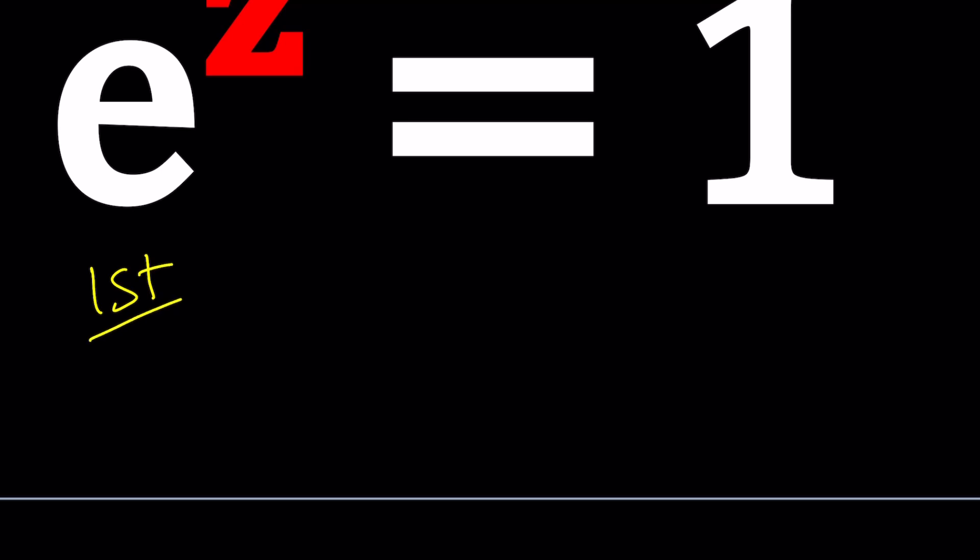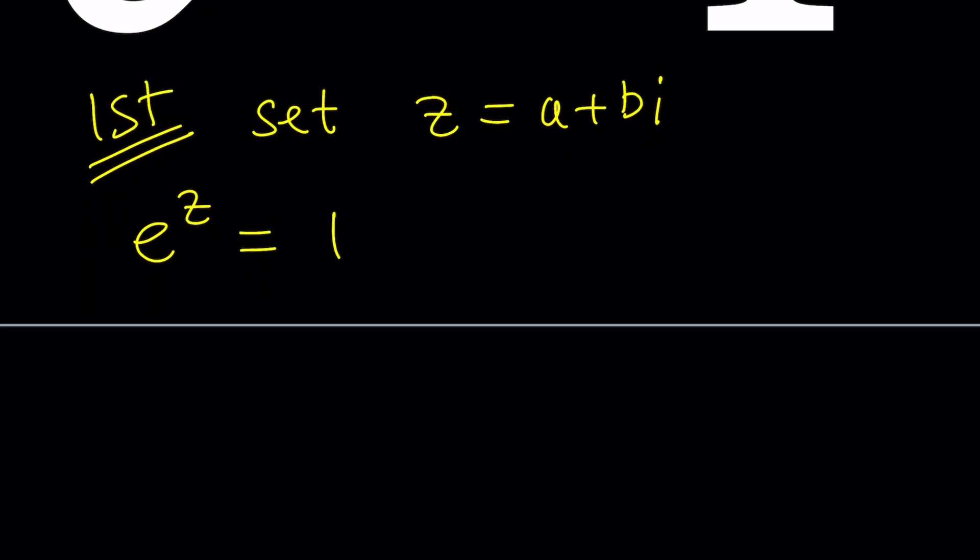So for my first method I'm going to set z equal to A plus B I. And why not? That's the name of this channel and it's actually almost all the time helpful. So now let's replace z in our equation which is e to the z equals one with A plus B I. So we get e to the power A plus B I equals one. And this is basically complex exponentiation.